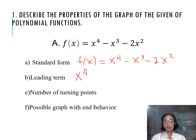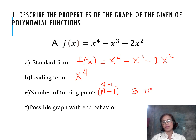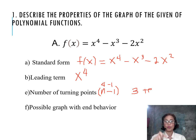What about the number of turning points? The number of turning points is given by n - 1, where n is the degree of the polynomial function. Since the degree is 4, we solve 4 - 1, giving us 3 turning points. Remember, turning points are those points at either the maximum or the lowest point of the polynomial function.